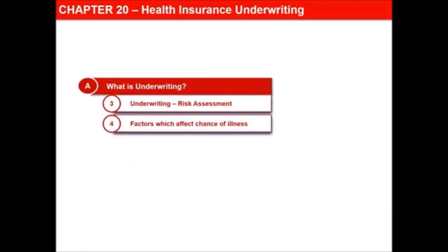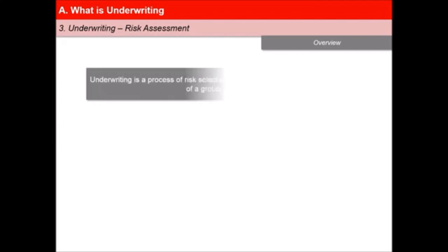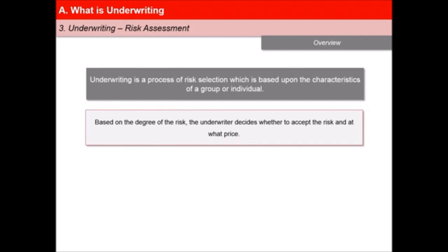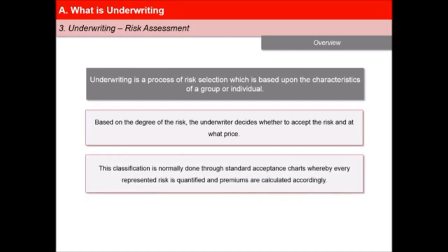In this next video of the lesson, Health Insurance Underwriting, we will learn about risk assessment and the factors that affect the chance of illness. Underwriting is a process of risk selection which is based upon the characteristics of a group or individual. Based on the degree of risk, the underwriter decides whether to accept the risk or not and at what price. This classification is normally done through standard acceptance charts, whereby every represented risk is quantified and premiums are calculated accordingly.